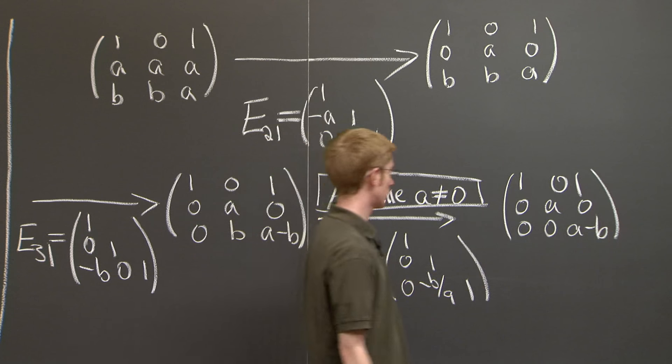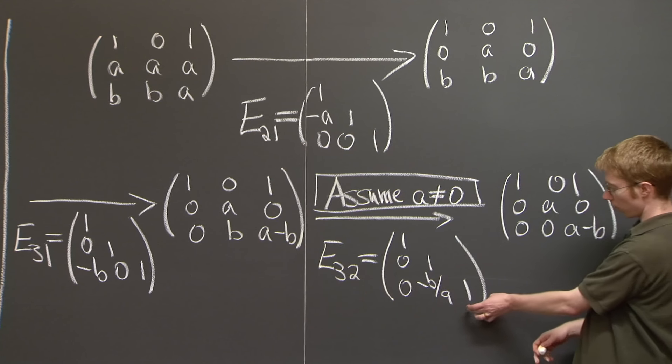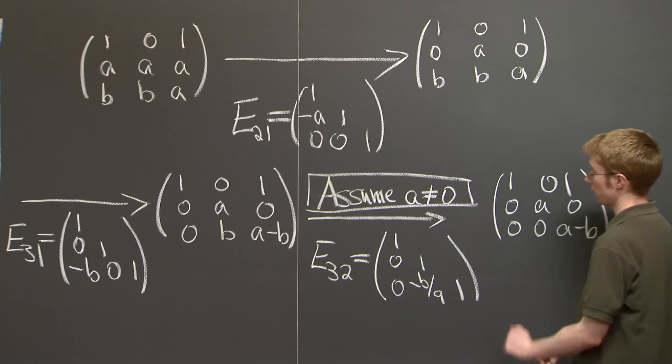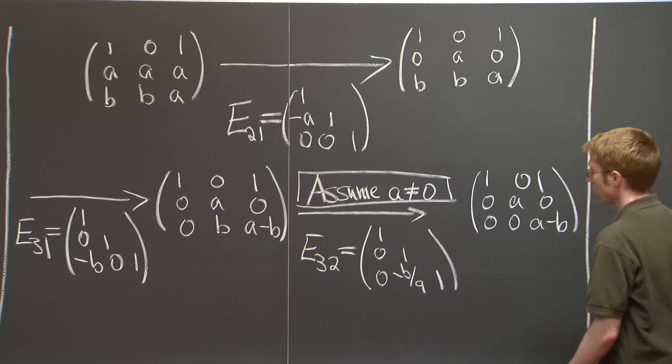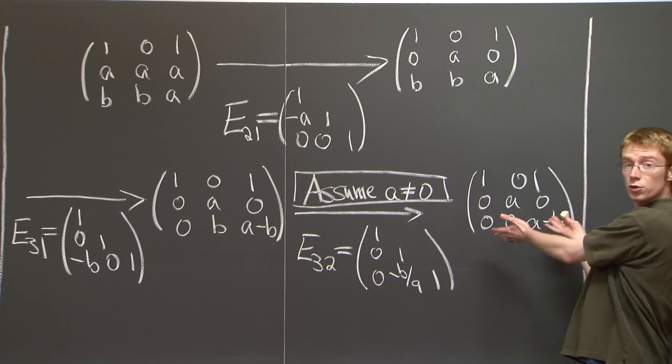E_{3,2} now. There's our elimination matrix. We replace the third row by the third row minus b over a times the second row,